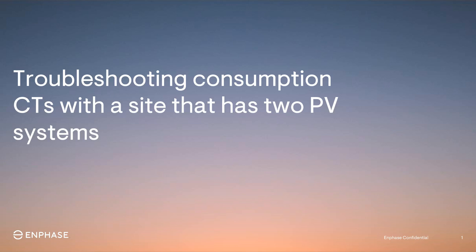Hi and welcome to another video from the Enphase training team. The following video will provide you with troubleshooting steps to take if there are incorrect meter readings on a site with two PV systems. In some cases, customers report seeing negative consumption during the daytime when the production meter is aligned with microinverter values. The following video provides you with steps to take to resolve this issue.